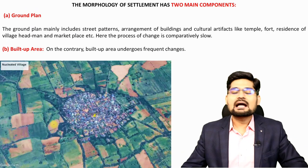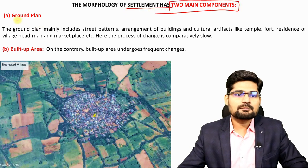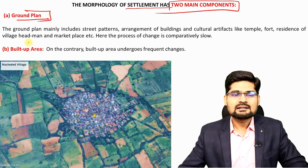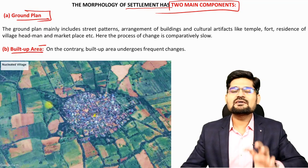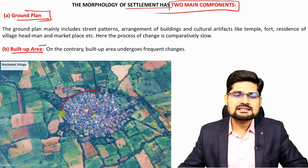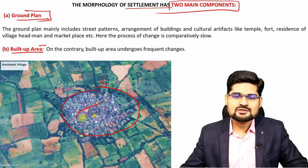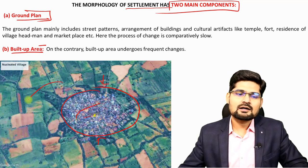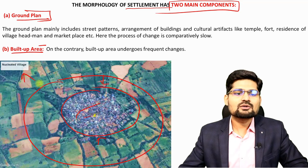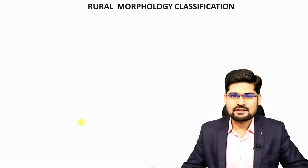With this comes the idea that morphology of settlement has two major components: one is the planning aspect — the ground plan — and the other is the built-up area. Whenever we say physical morphology or simply morphology, we mean what you see in a satellite image — for example, a clustered settlement with many lanes, rows, and clustering around it. This is what we call a nucleated village.